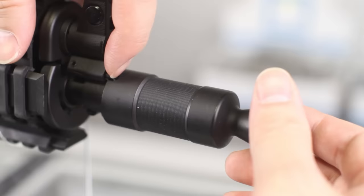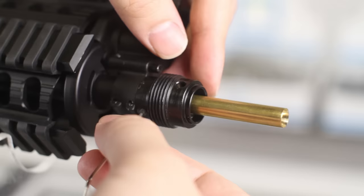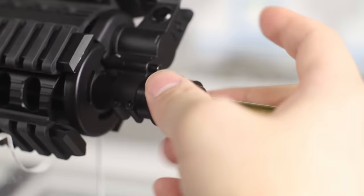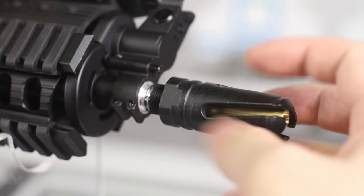It's a 24mm clockwise thread. Remove the grub screw on the collar underneath, and that will reveal a standard 14mm counterclockwise thread. This means you can use most 14mm CCW flash hiders on the market, but an AK-specific flash hider will be able to interface with that pin.